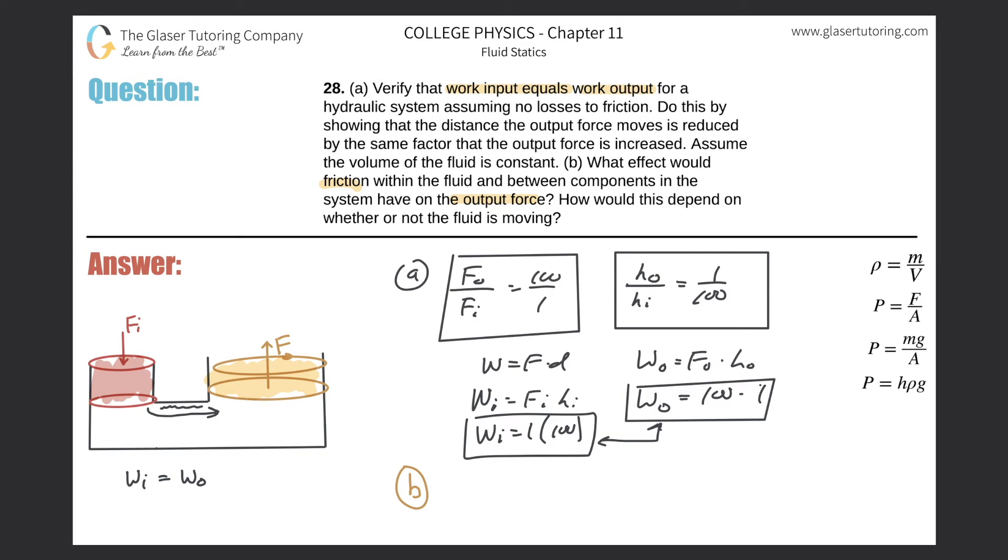However, this number will be reduced if there is friction of a moving liquid against the surface of the container. The input work should equal the actual output work plus any type of frictional losses. We can see that mathematically. If I solve for the actual output work, we would subtract the friction over to the left-hand side.